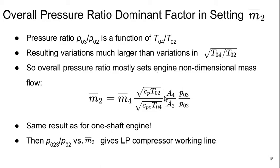So, the overall pressure ratio is mostly what's going to set the engine non-dimensional mass flow. This is the same result that we got for a one-shaft engine. And then we get the LP compressor working line by essentially plotting a locus of P023 over P02 versus M bar 2.